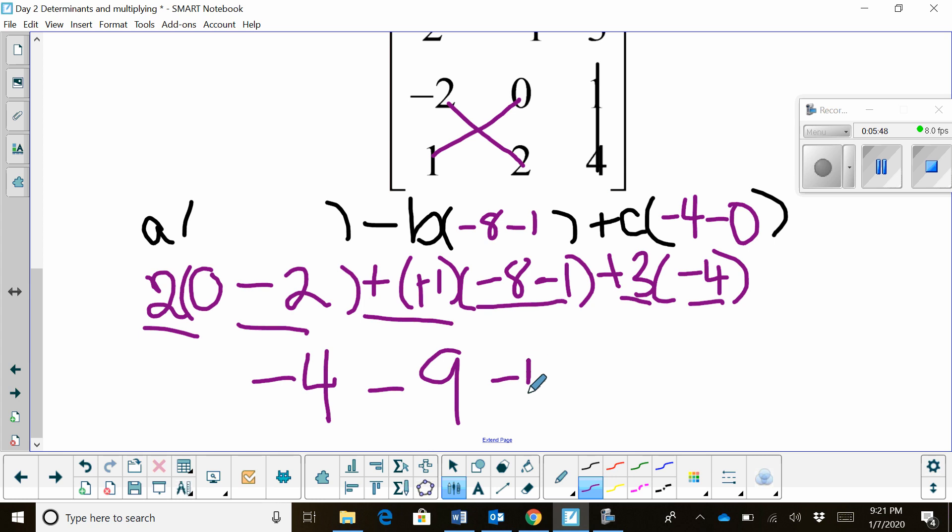And then I've got 3 times negative 4, which is negative 12. So once I add all those together, I get negative 4 minus 9 is negative 13 minus 12. That gives me a negative 25.